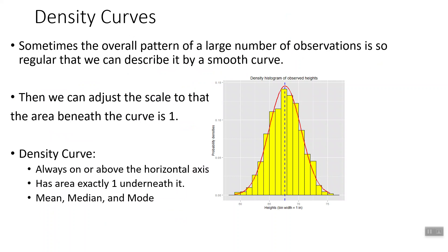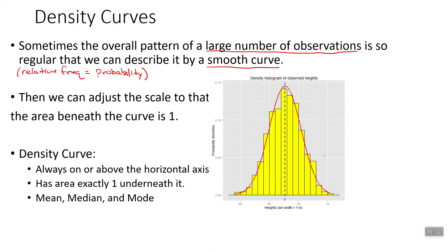The other thing to talk about in this video is density curves. A lot of times we have histograms that are bars and they resemble some sort of smooth shape. If we have a large enough number of observations, it gets closer and closer to being a smooth shape. We usually divide the bars to get them as relative frequencies so that each bar is a probability — relative frequency equals probability. So what we do is we make these curves into smooth curves; we just approximate them by smooth curves.